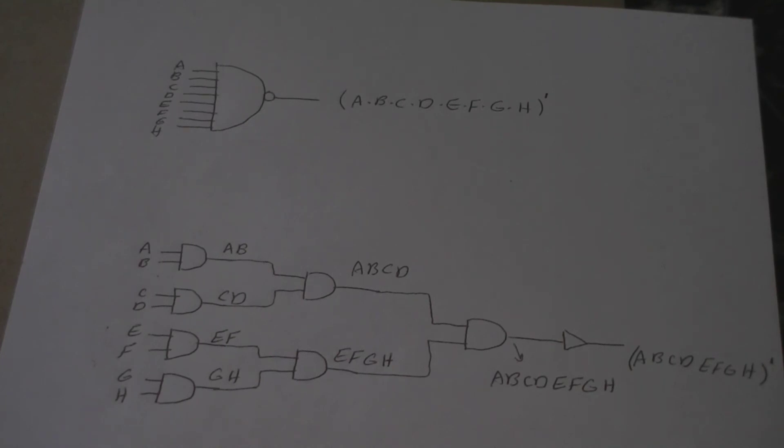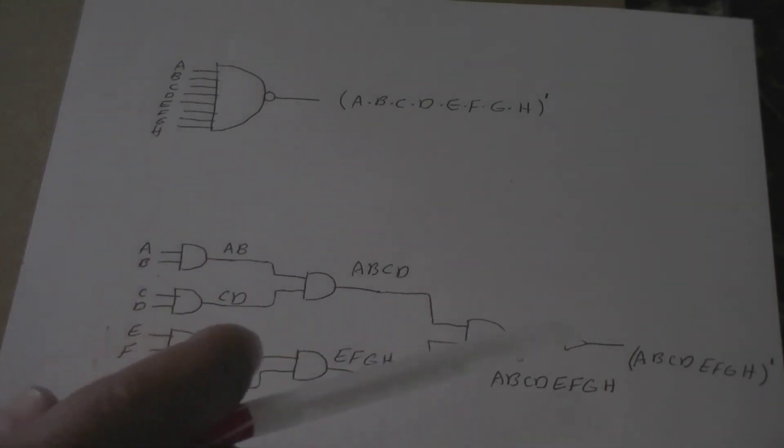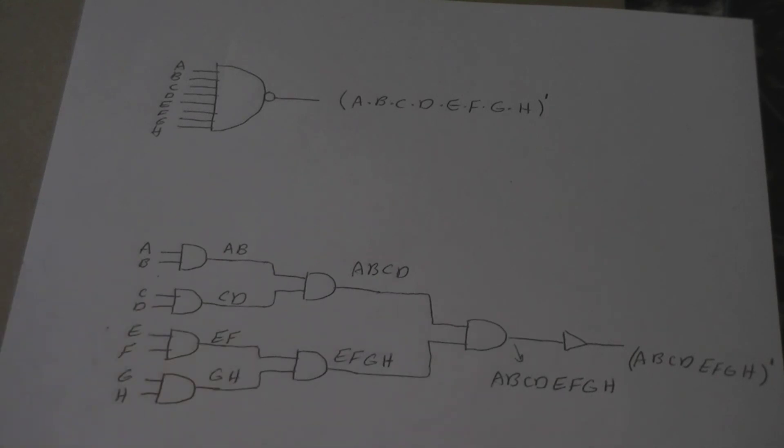Now we count the number of pins. Each one of them has two pins: 2, 4, 6, 8, and the output, and again the input to the next is two. So 8, 4, 12, 2, 14, and then the NOT gate is 15. That's the minimum you can get. Thank you.